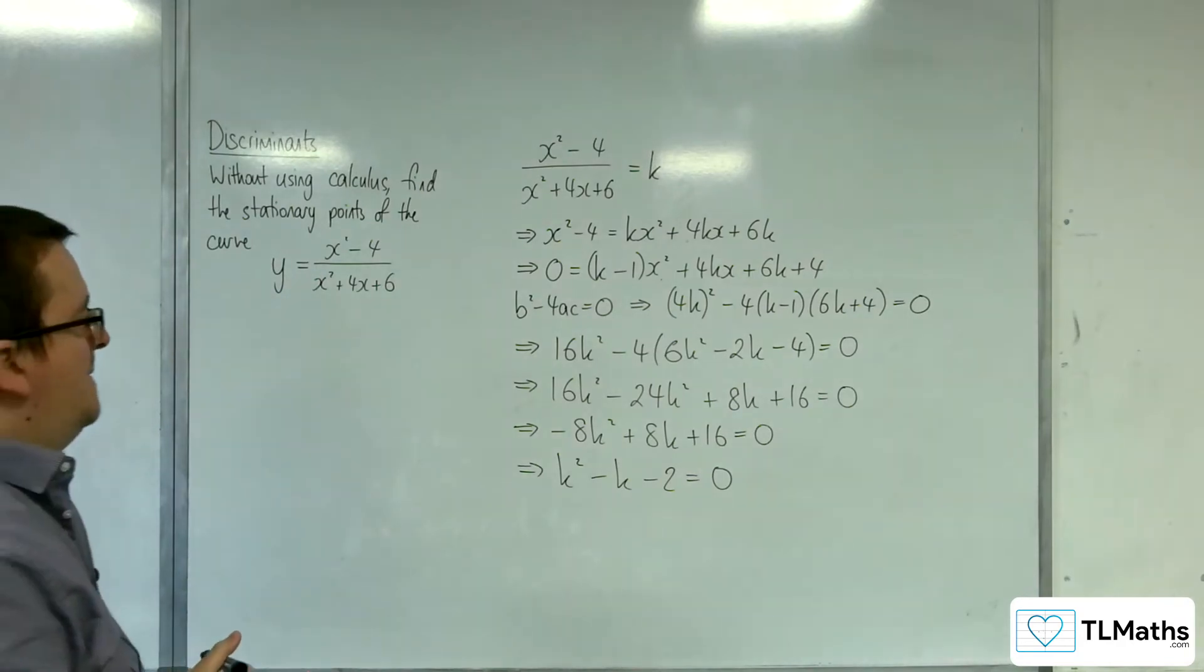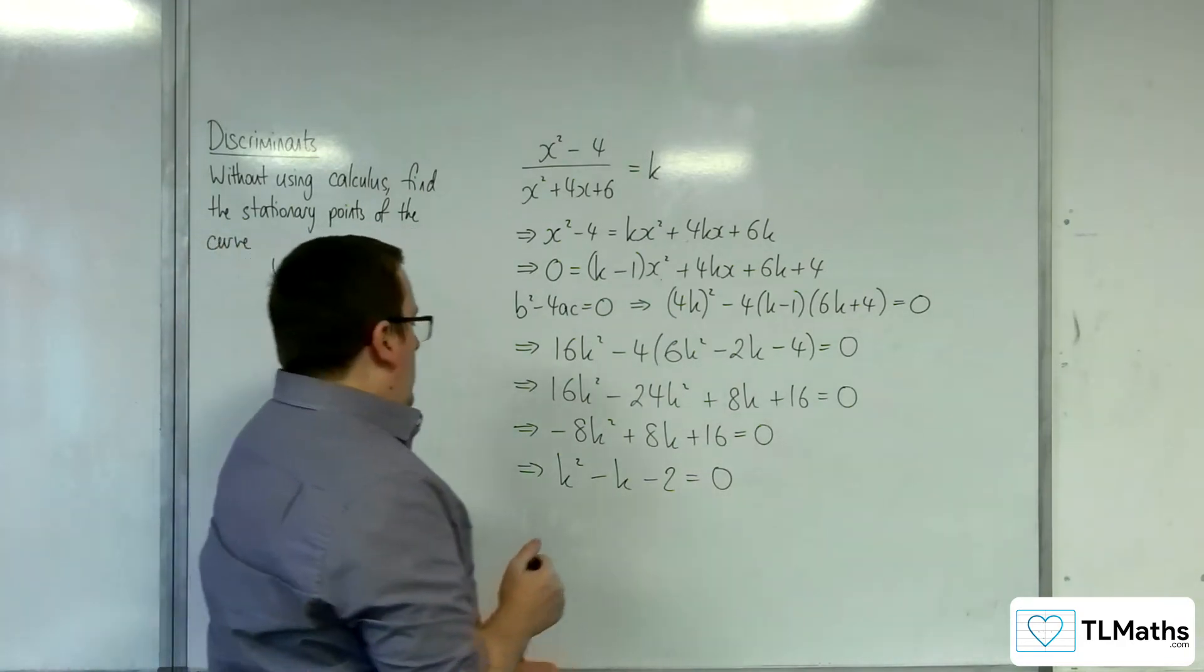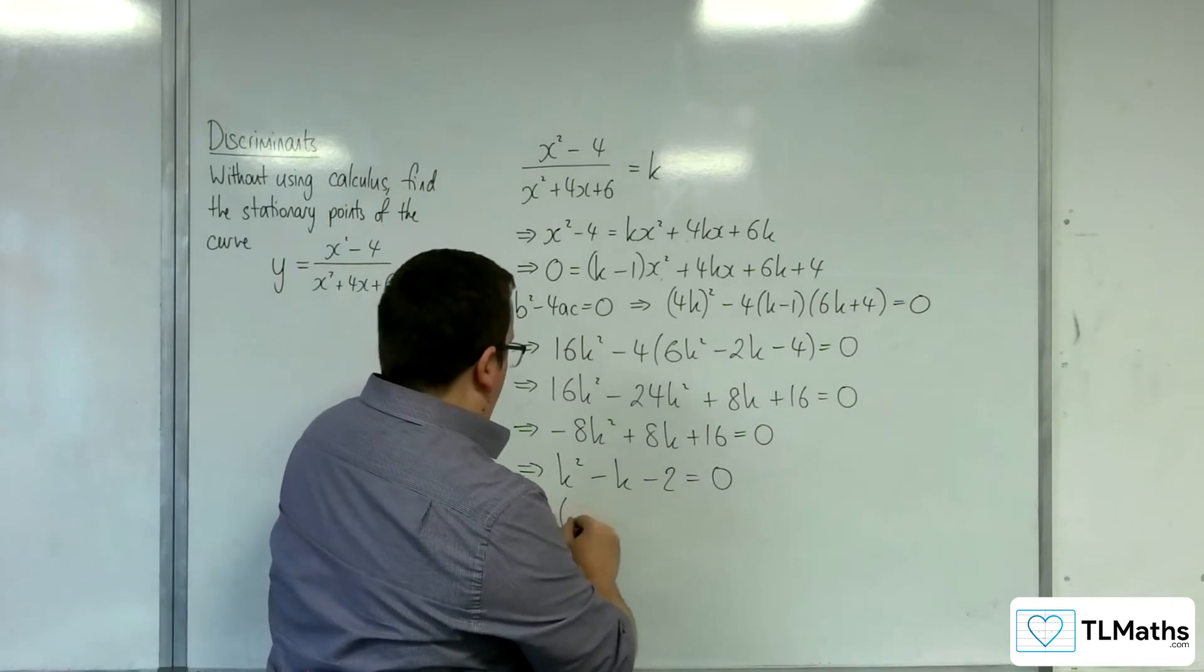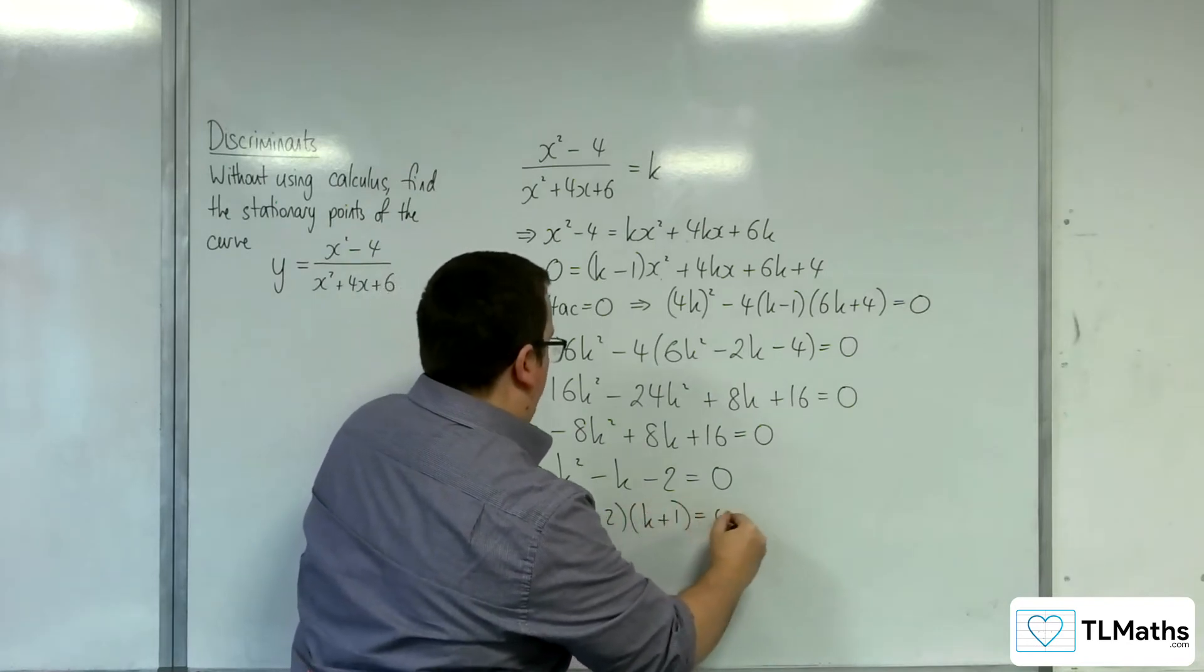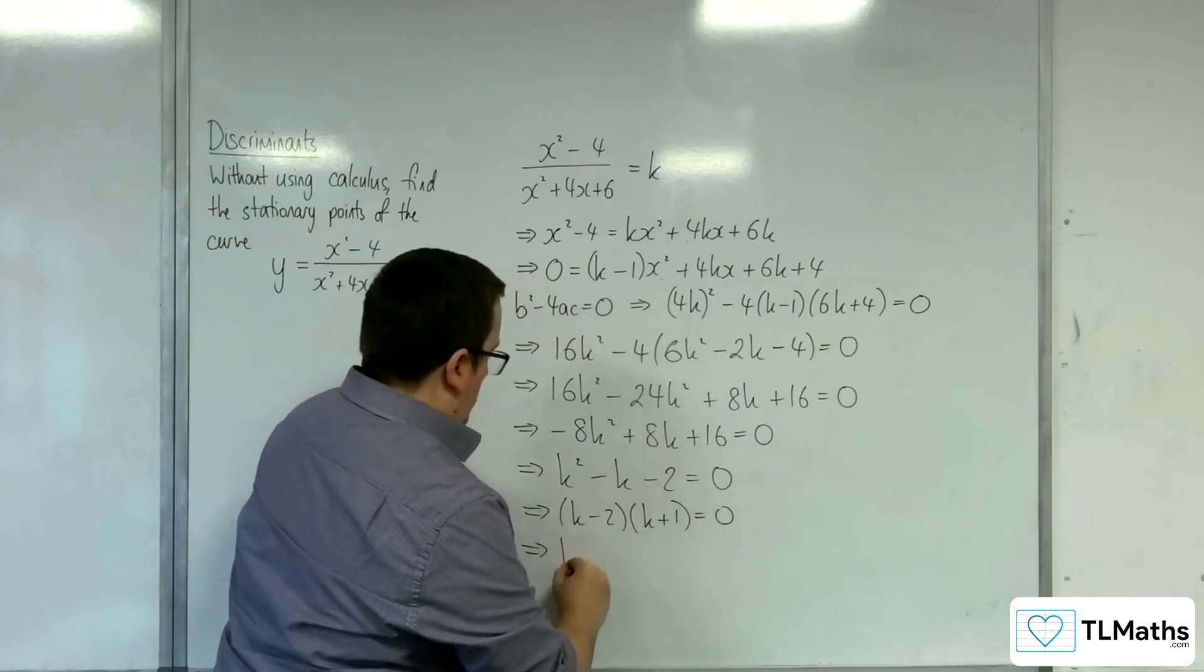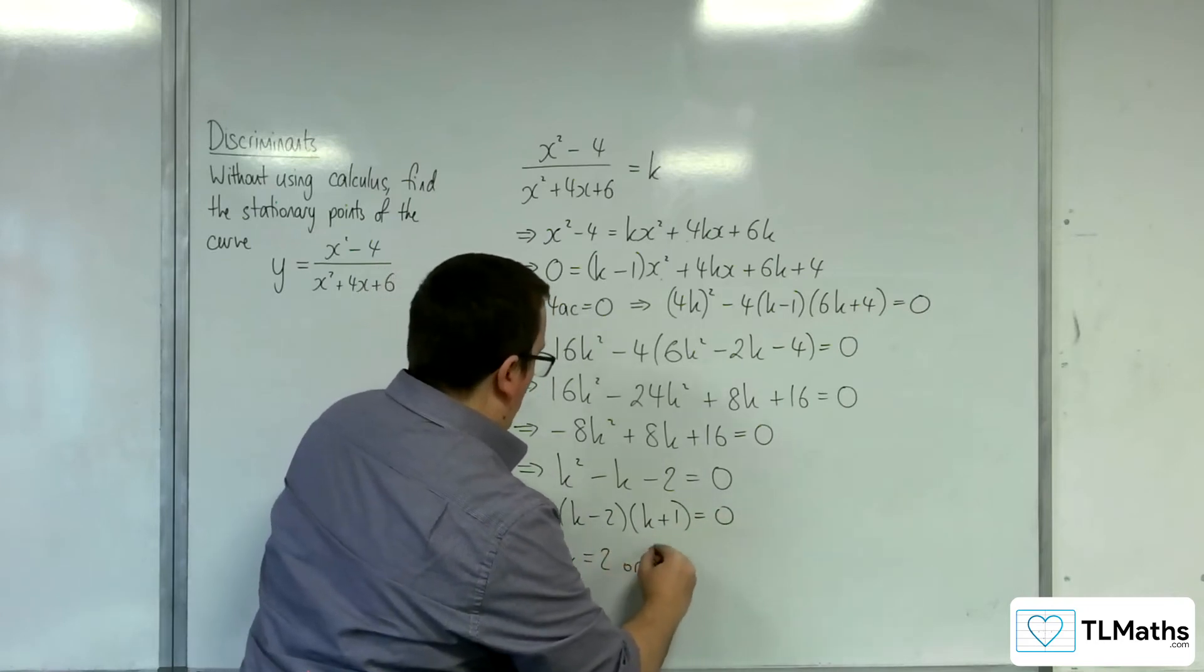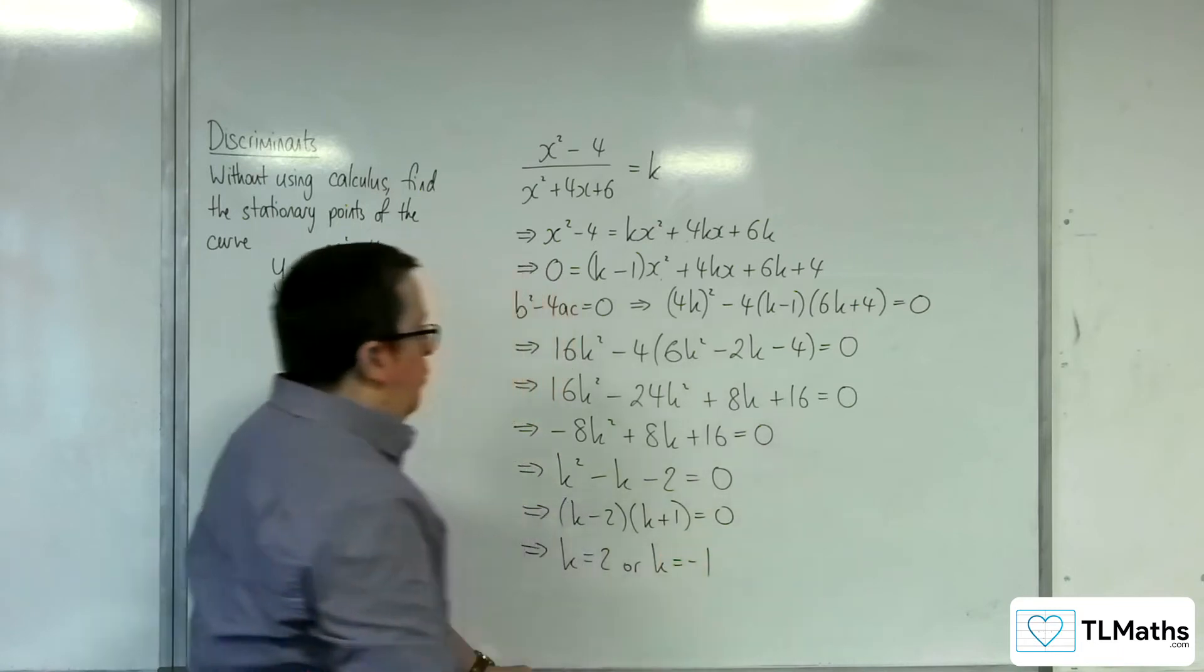Right? So this factorises to k take away 2, k plus 1 equals 0. So either k equals 2 or k equals minus 1.